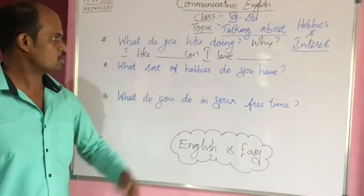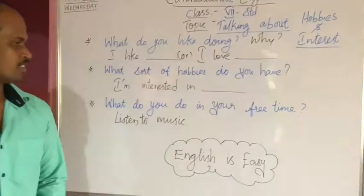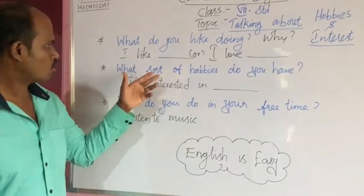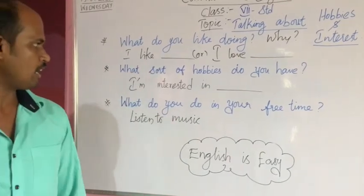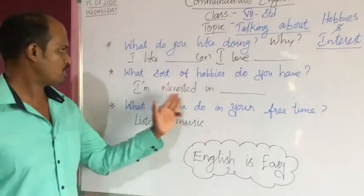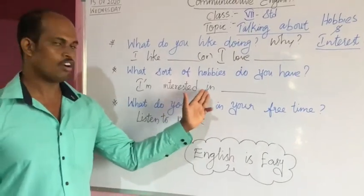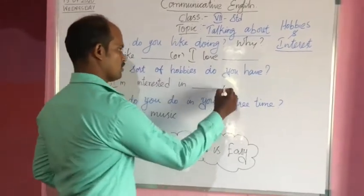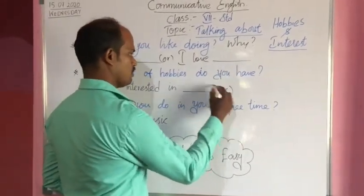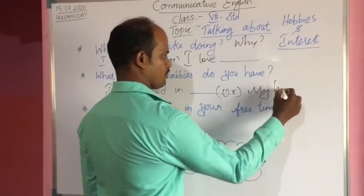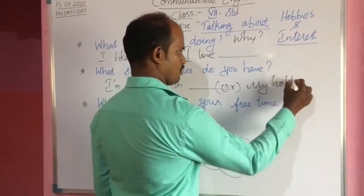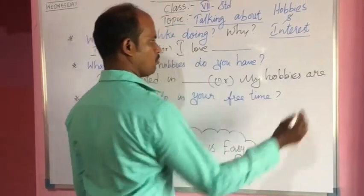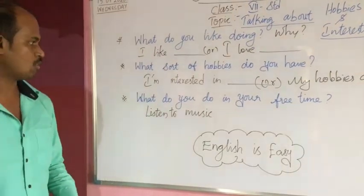What sort of hobbies do you have? That is the second question. The answer for the question — what sort of hobbies do you have? — is: I am interested in, or my hobbies are... My hobbies are playing football, collecting stamps, and so on.